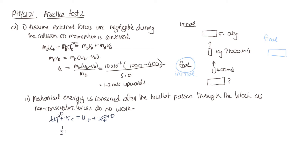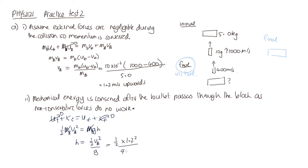Initially we've got half the mass of the block times the velocity of the block squared — which we just calculated — is equal to the final potential energy, given by mgh, where this is the mass of the block. These two masses are the same, so we can cancel them out. So h is equal to half VB squared over g. That's equal to half times 1.2 squared over 9.8. Solving that, we get 0.073 metres, which is equal to 7.3 centimetres.